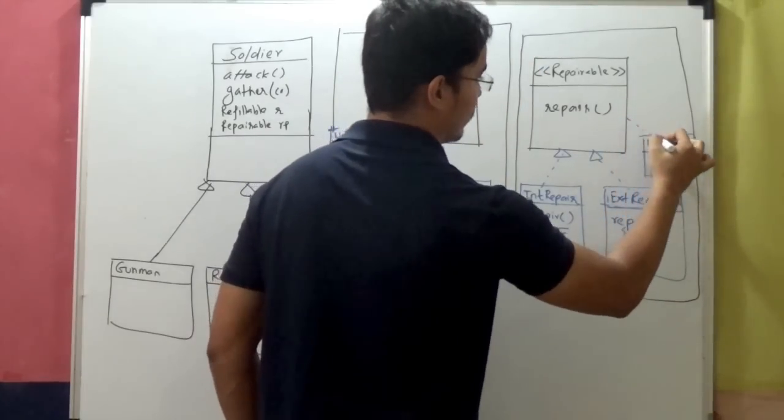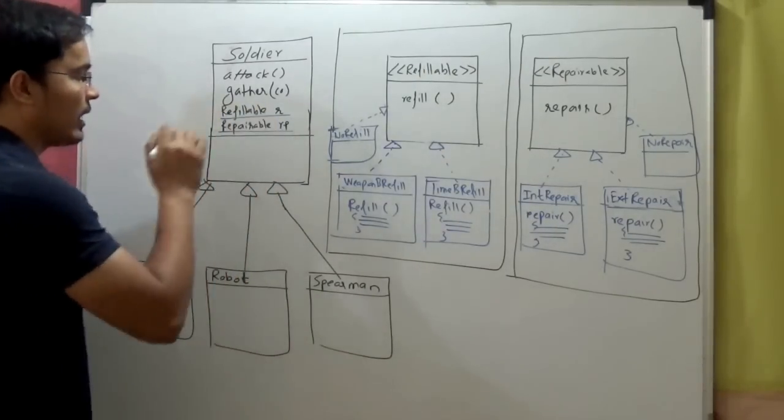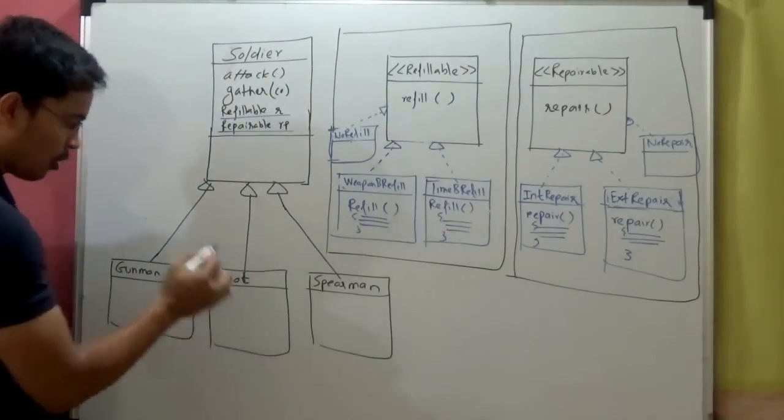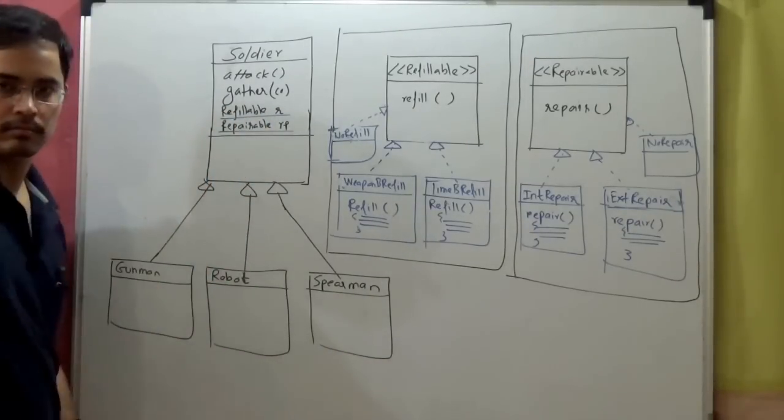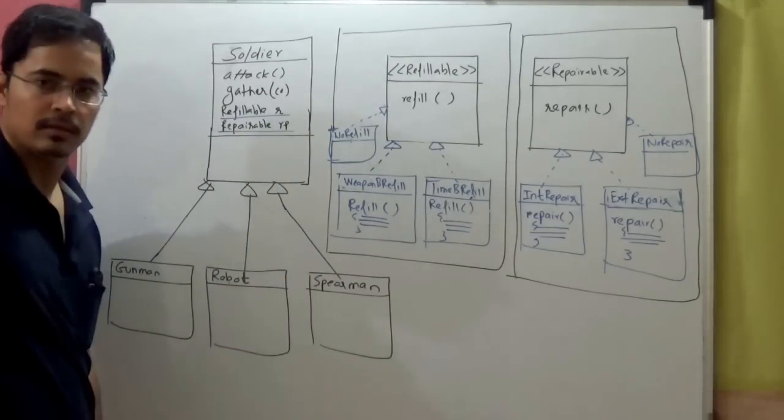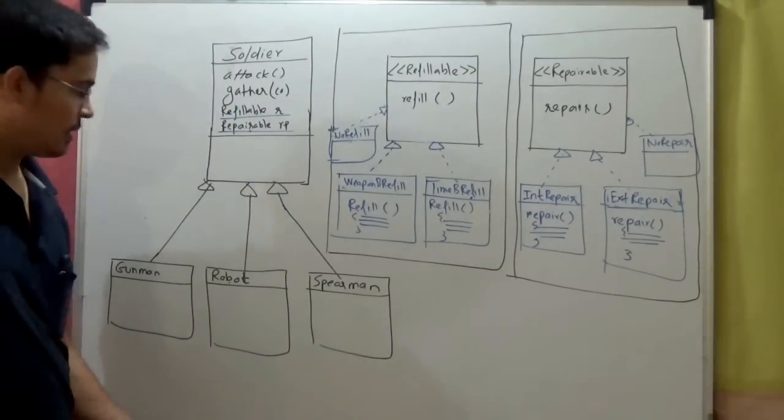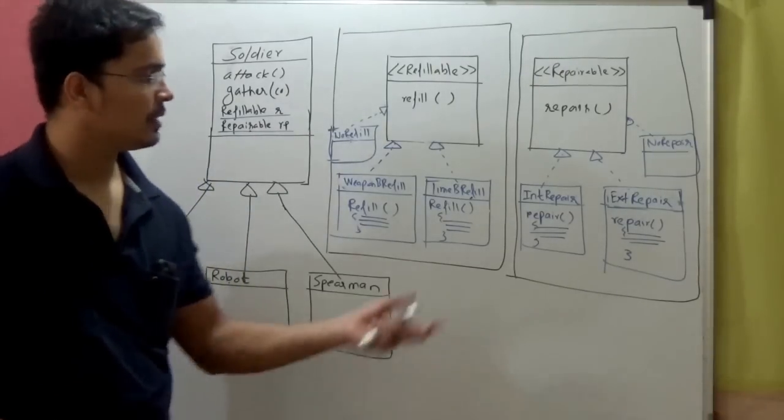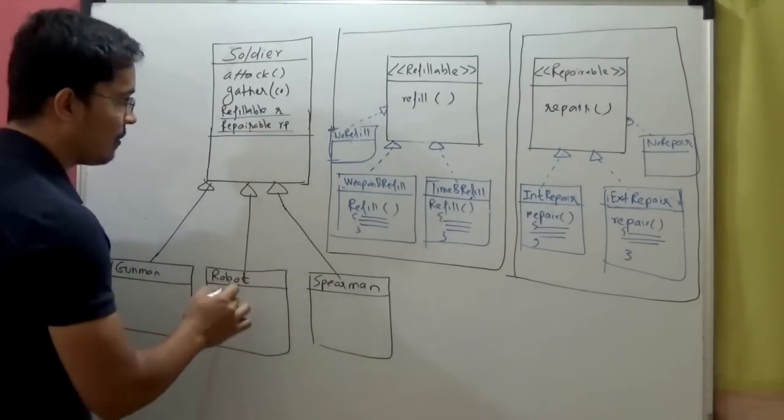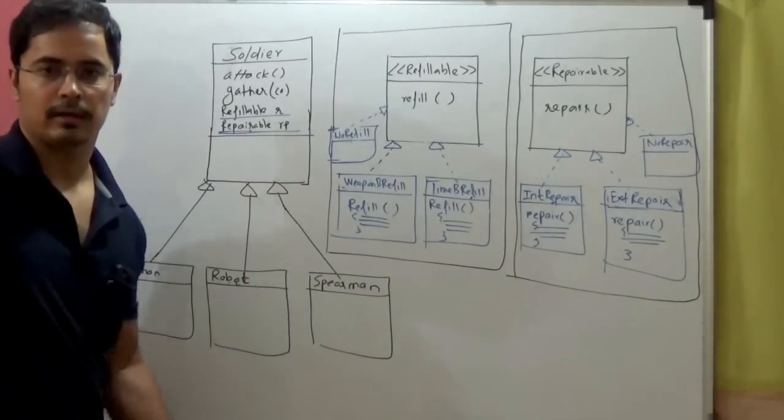So now spearman, while you create the object of spearman, for this contained refillable, it will provide the instance of no refill and no repair. For robot, while creating the instance of robot, you will have to provide for this contained refillable. So robot can use, for refillable, you can use time-based refill object. And for repairable, it can use external repair object. Tomorrow we want to change it or robot will also be internally repaired by itself. Then dynamically, at runtime, we can change. Robot will provide for refillable as time-based refill implementation. And robot will provide for repairable as internal repair.